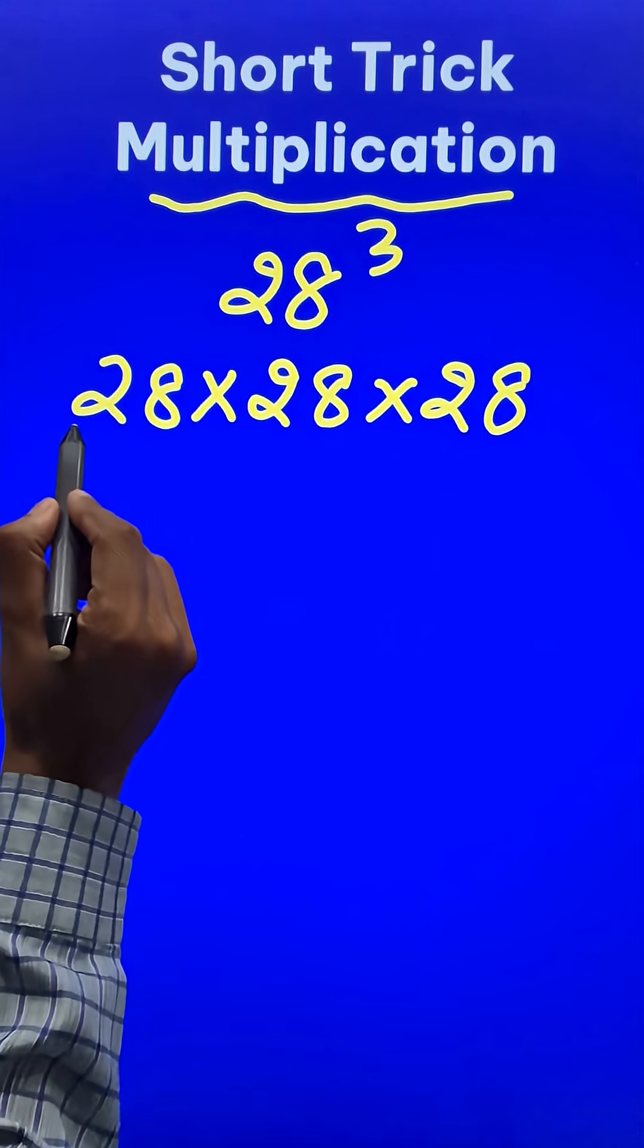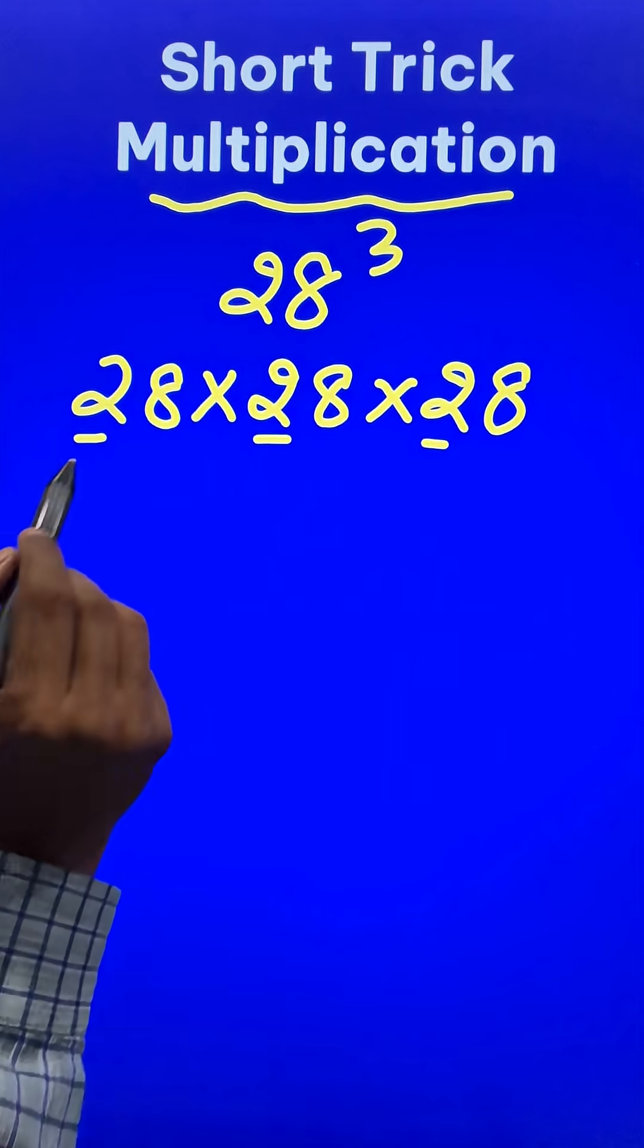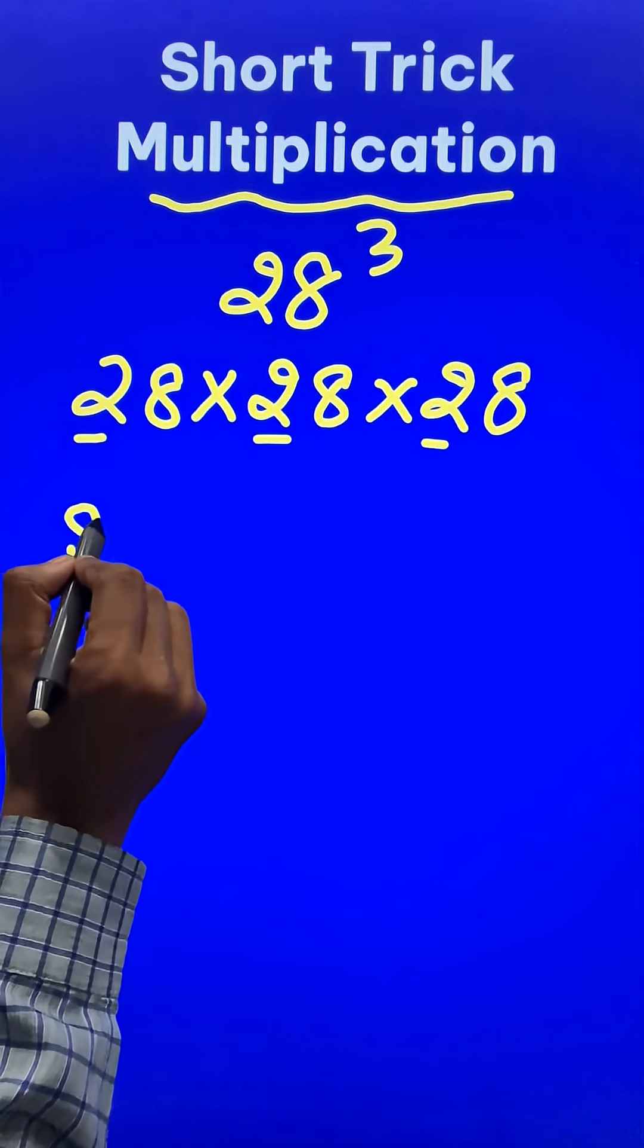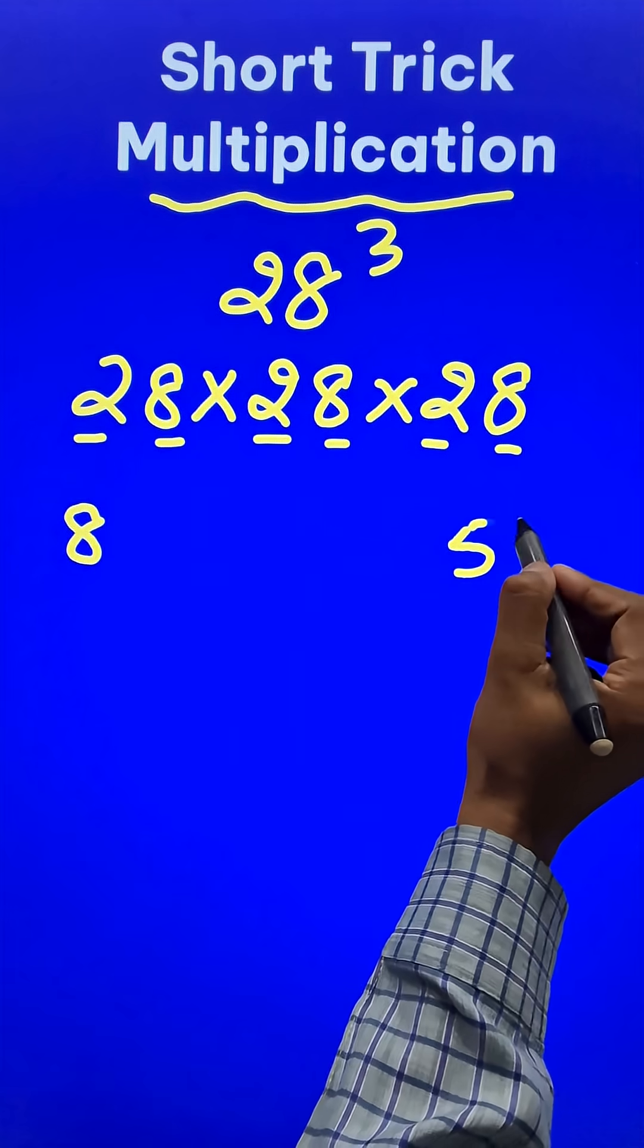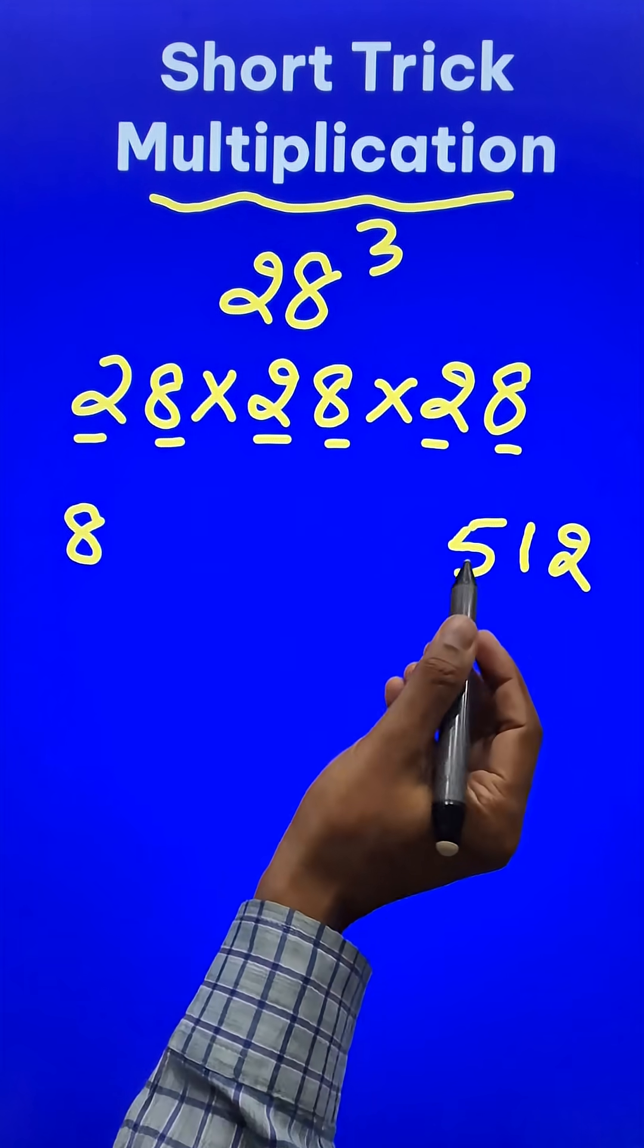How do you do it? 2 times 2 times 2, that is 8, right? So I will write 8 here. 8 times 8 times 8 is 512, so I will write 512 here. And then the magic begins.